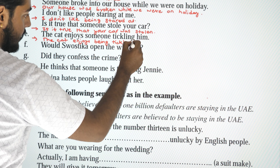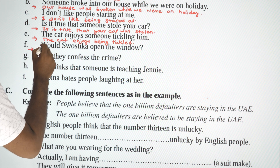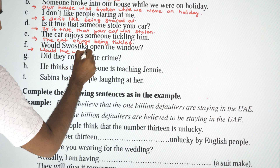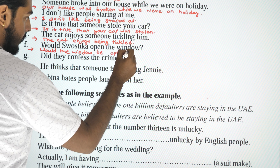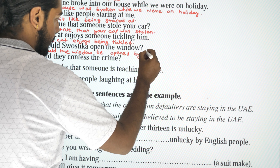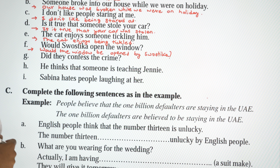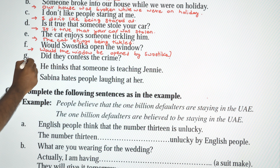Next: 'Would Sustika open the window?' Sustika is the subject, window is the object. Passive: 'Would the window be opened by Sustika?' Here Sustika is a significant subject, so 'by Sustika' is included.